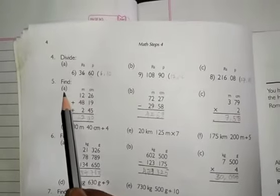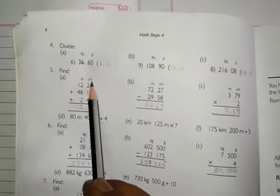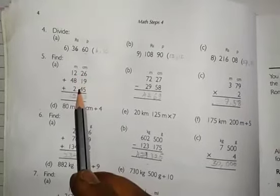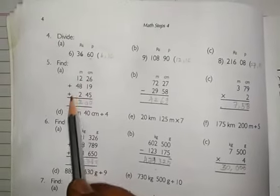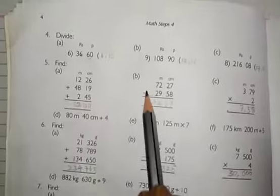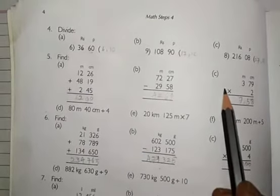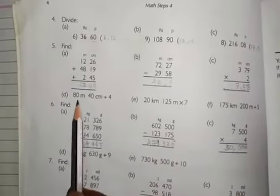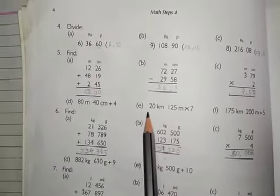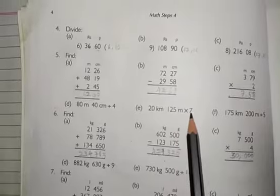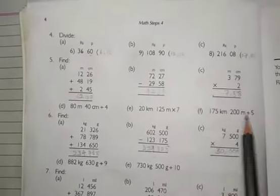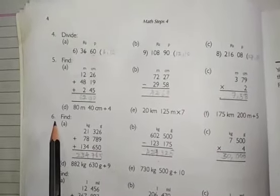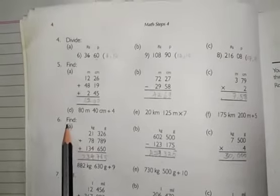Question number 5. Find. Here have meter and centimeter. You add A number. Subtract B number and C number is multiplication. You multiply it. D number, division. E number, multiplication by 7. And F number, division.